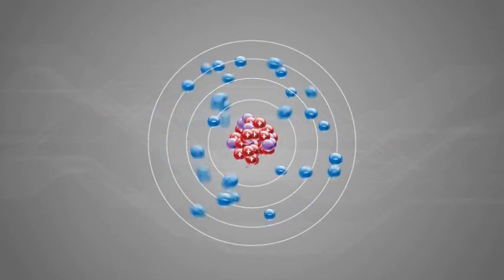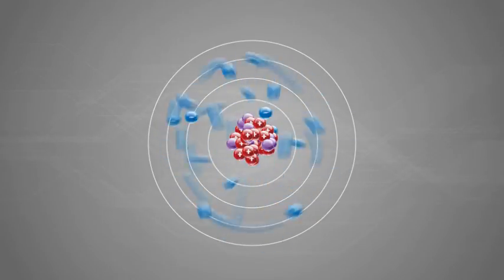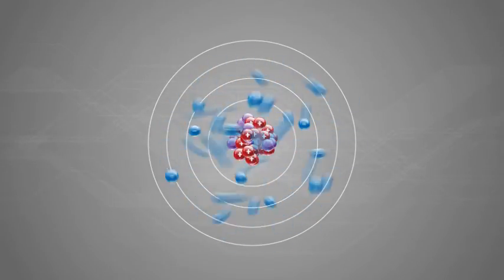The electrons are moving at incredible speed, three-quarters the speed of light. So what stops them from shooting off in any direction?